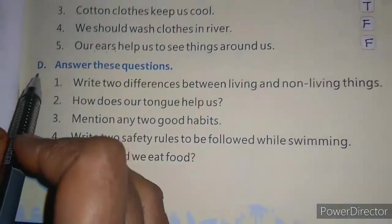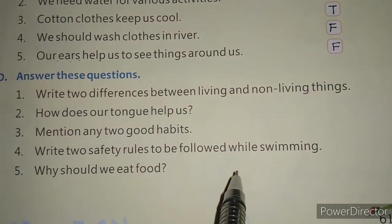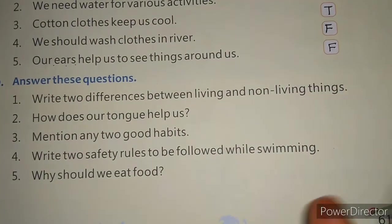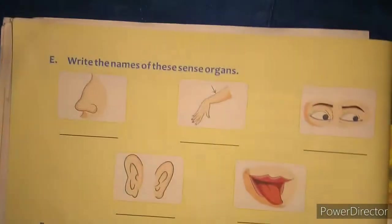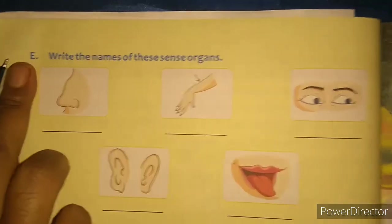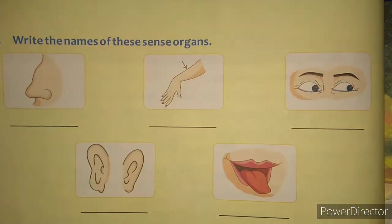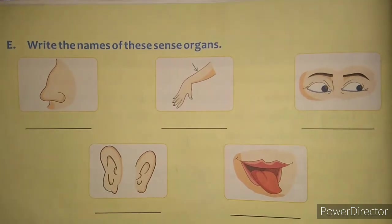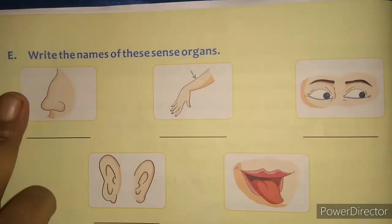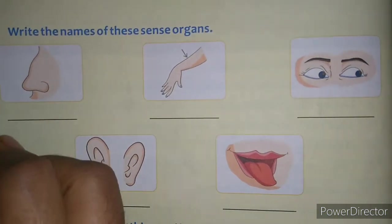Children, we are not doing the question-answer exercise in this video — we will do that in the next video. Now let's do the next exercise, that is E: write the name of these sense organs. We have studied about the sense organs and we have five sense organs in our body. So identify each picture and write the name.